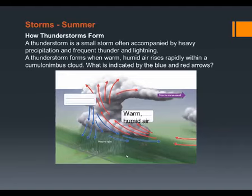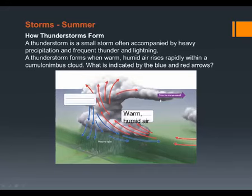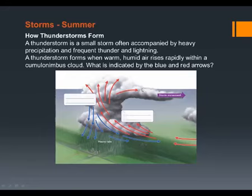As air cools, especially if it has moisture in it, condensation occurs. So as that warm humid air rises, condensation occurs. We get the top part of the cumulonimbus cloud forming that big anvil-type shape, because more and more condensation is occurring the higher up you get. As that air cools, it has to sink back down, so cool air moves downward. This creates updrafts and downdrafts inside the storm.